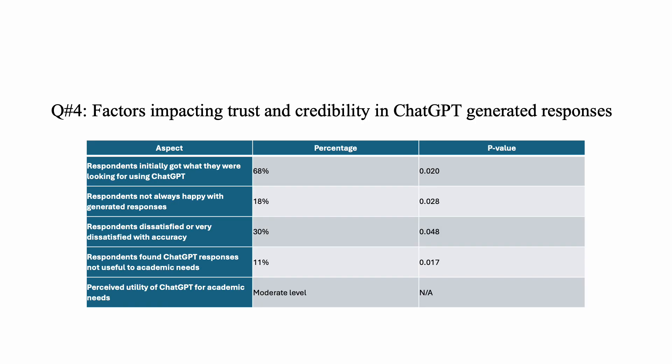In regards to the factors impacting trust and credibility in ChatGPT-generated responses, 68% of respondents initially got what they were looking for when using ChatGPT. However, less than 18% were not always happy with what was generated, suggesting room for improvement. Less than 30% rated the accuracy of ChatGPT responses as dissatisfied or very dissatisfied, and less than 11% stated that ChatGPT responses were not useful to their academic needs. The average response demonstrates a moderate level of perceived utility.